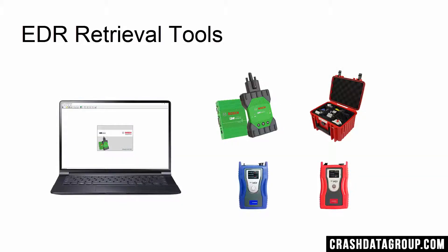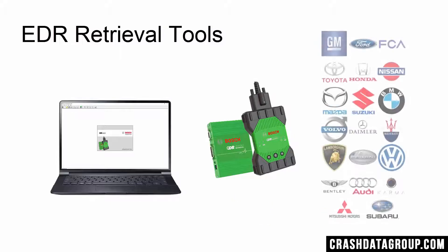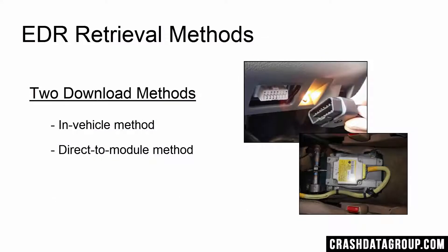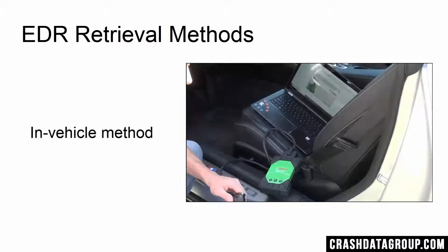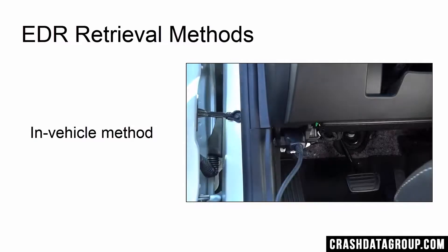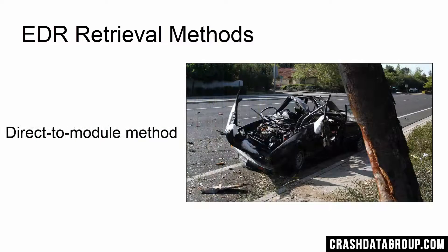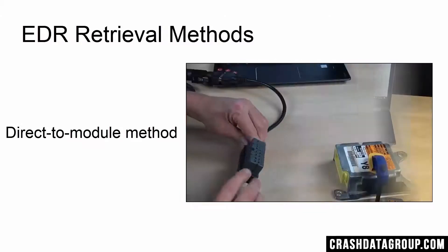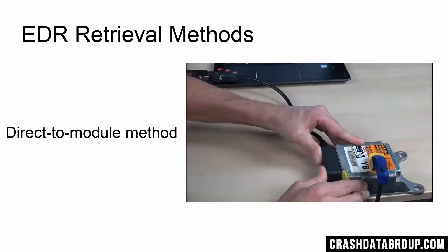Known as EDR retrieval tools, specialized software and hardware are needed to access and download EDR data from a vehicle. The Bosch CDR tool is used to retrieve EDR data from cars made by the majority of auto manufacturers — over 50 brands of vehicles are supported. Hyundai, Kia, and Tesla have their own EDR tools to retrieve EDR data from their vehicles. Using these tools, there are two methods to retrieve the data: EDR data can be downloaded by connecting to a vehicle's OBD port, which is the same connector mechanics use to access trouble codes and perform smog checks. For severely damaged vehicles, EDR data can be downloaded by connecting directly to the airbag computer using a corresponding connection cable. The retrieved data is the same regardless of which method is used.